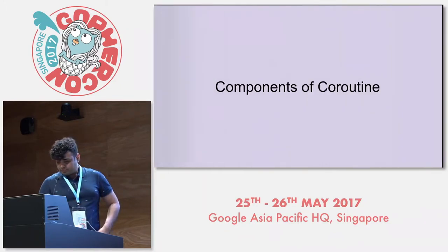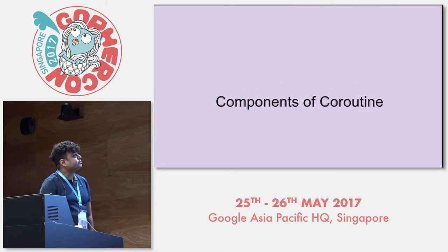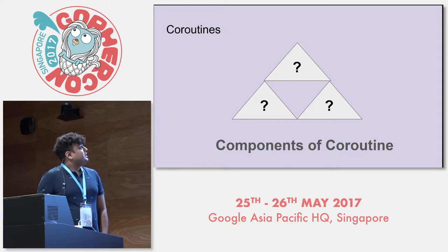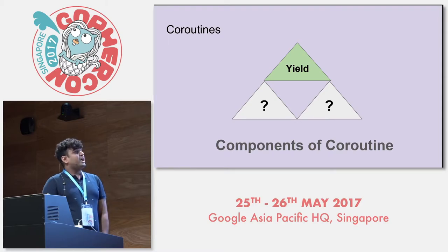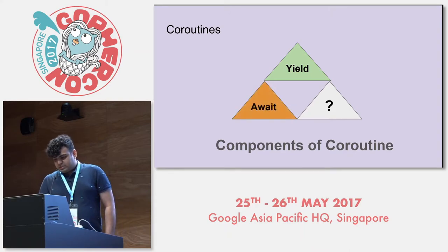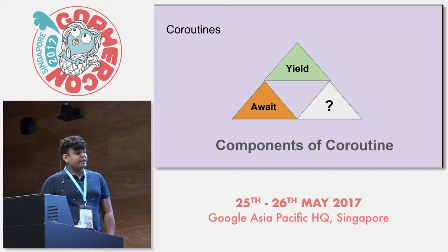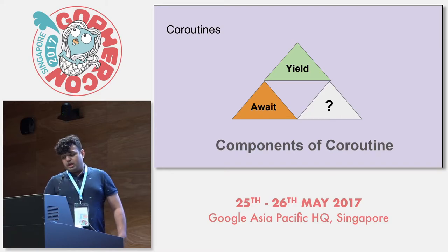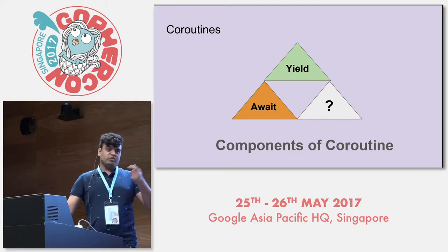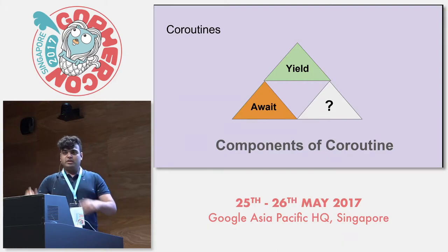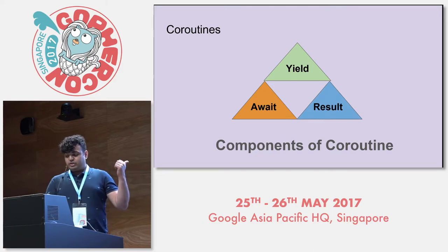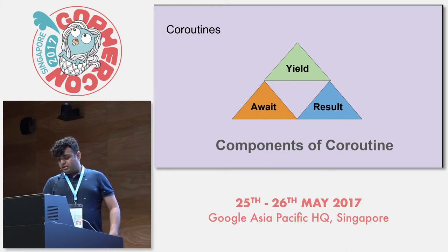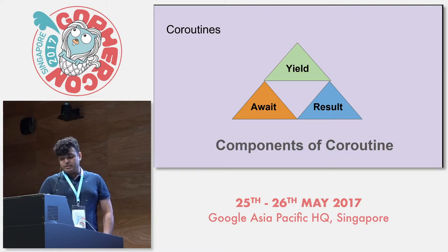Components of a coroutine: conceptually, it can be broken down into three main actions. First is yield — it tells the event loop that it is done executing for now and is yielding control. Second is await — it tells the event loop that it is waiting for another task to be completed. If the coroutine is waiting on another task, the event loop makes note of it saying, 'This one is waiting on someone else, so let's not delete it yet.' The third is result — if the await is waiting on another task, the result is fed back here, and in case of an awaited coroutine, this might be used to feed the result back.